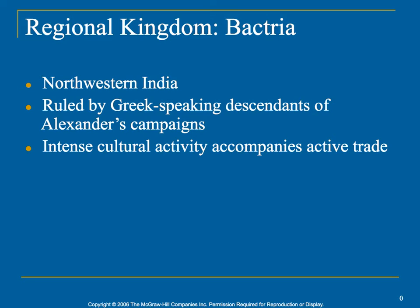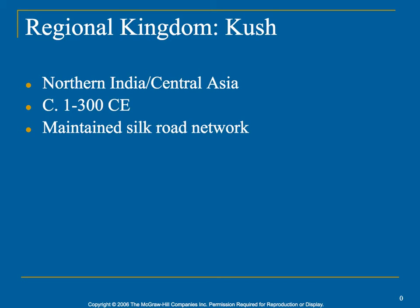After the collapse, you have some regional kingdoms that take over for a while. The Bactrians in the northwest part of India are ruled by Greek-speaking descendants of Alexander's campaign. So you do have remnants of Alexander the Great's soldiers staying in India and blending in with the locals, though they still speak Greek, which is unusual. There's intense cultural activity during this time due to a very active trade network, and other regional kingdoms like the Kushans basically maintain the Silk Road during this time period.